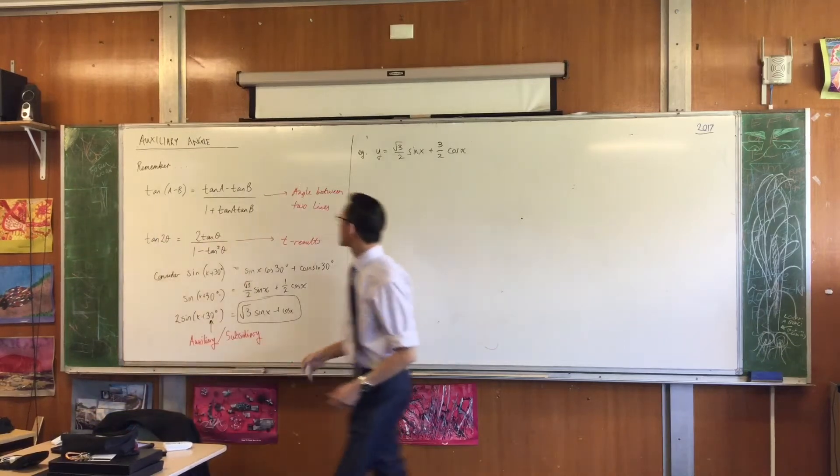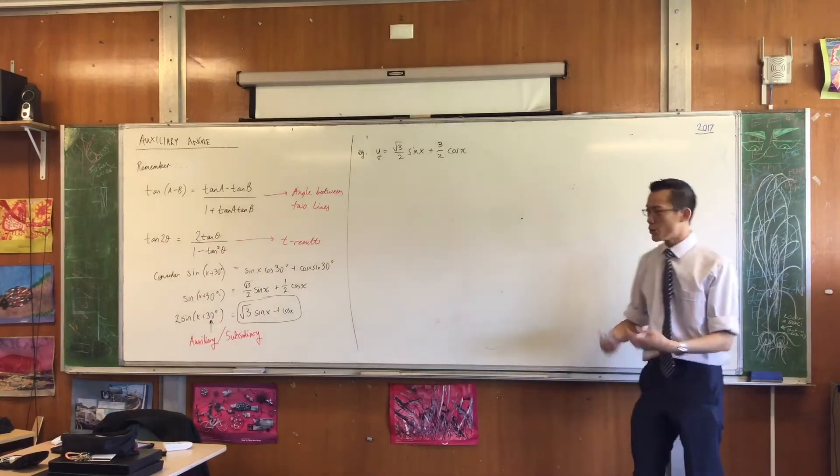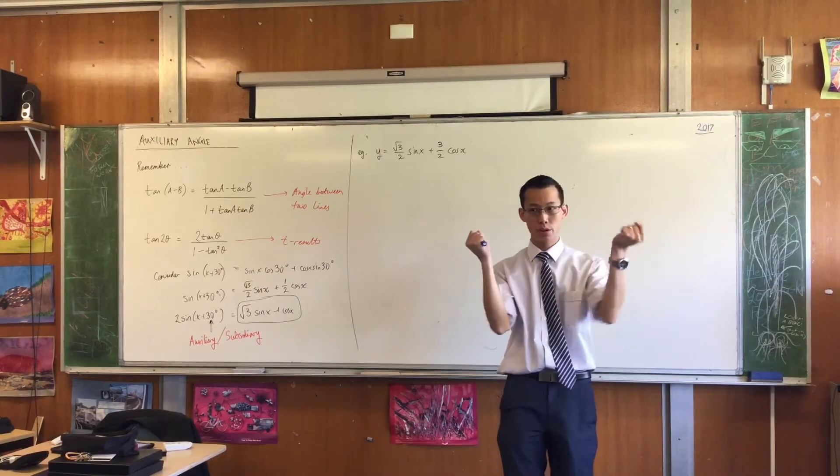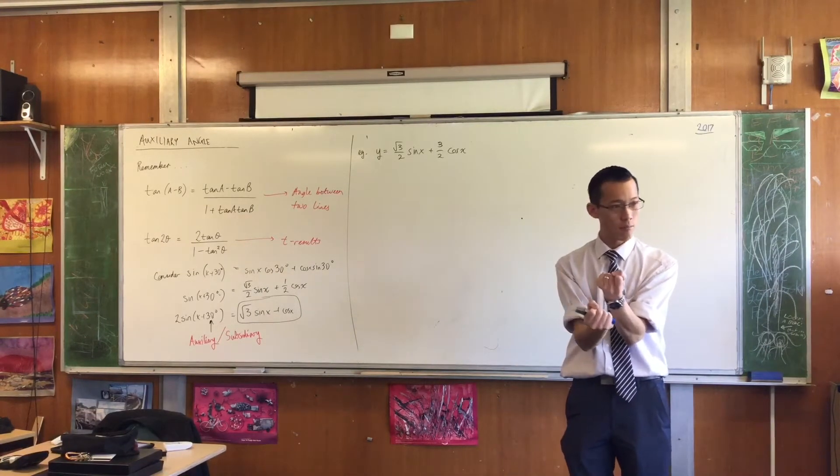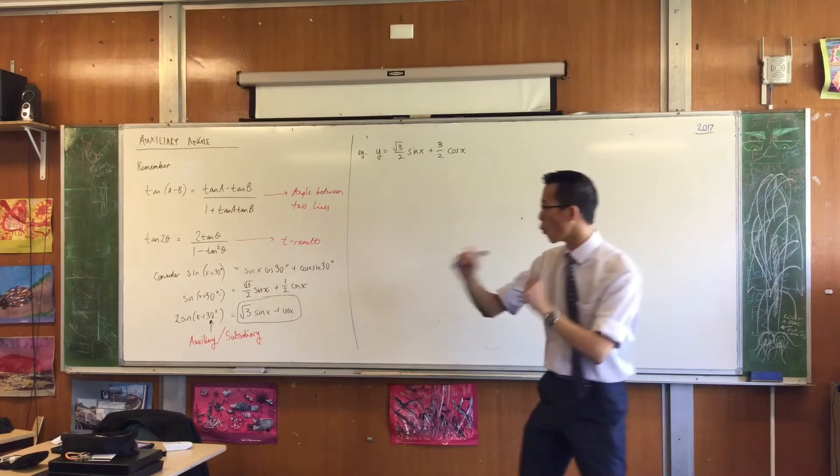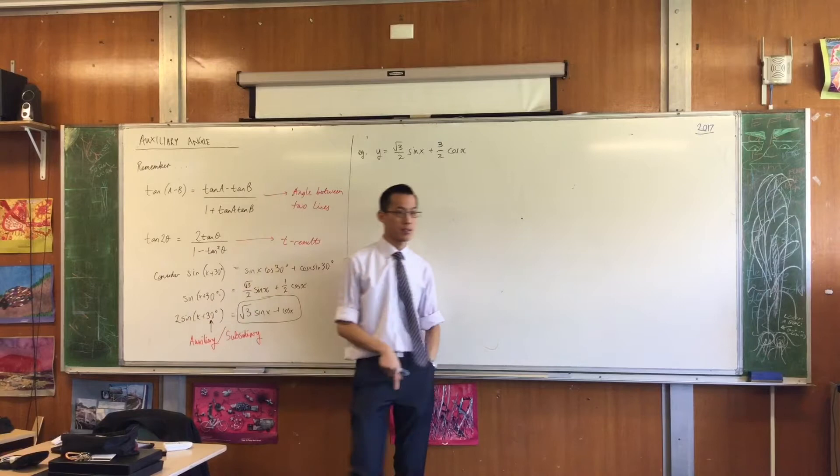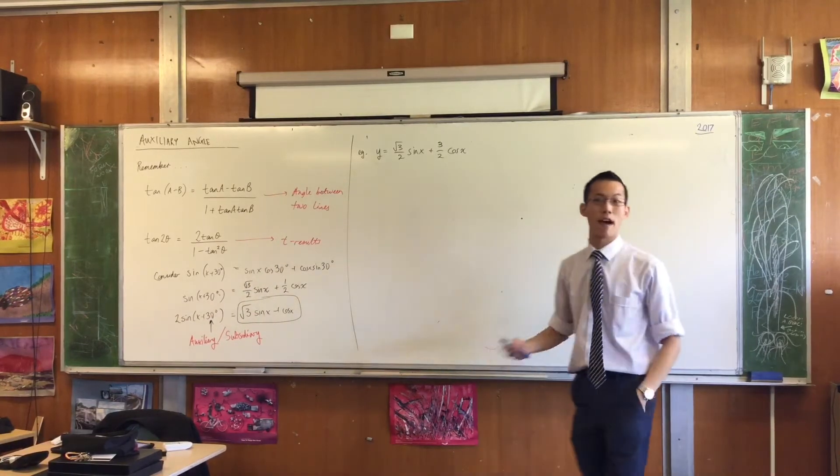What we're going to do is take this idea of auxiliary angle and say if I take two trig functions like this and combine them, I should be able to write them as one trig function with a different amplitude and a different phase. I'm going to use the auxiliary angle to find that phase.